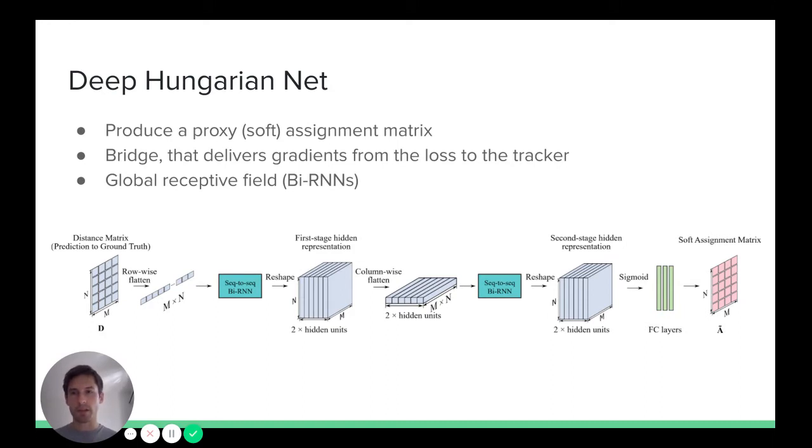Design of this network module is inspired by Hungarian algorithm that performs sequentially row-wise and column-wise reductions and zero-entry verifications. Inspired by that, we take distance matrix and then first flatten this matrix. And then we feed this matrix to bidirectional recurrent neural network that first computes row-wise hidden representation. The intuition behind this is that this helps us obtaining intermediate row-wise assignments. Then we flatten this hidden representation column-wise and then pass it to the second bidirectional recurrent neural network to obtain final assignments.